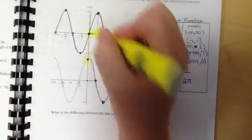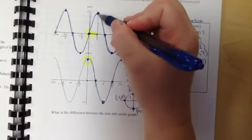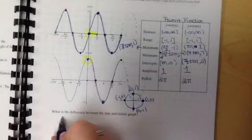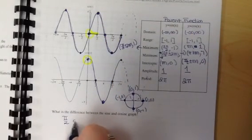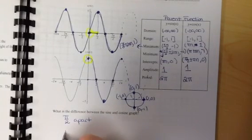But if we shift the length of π/2 over, then sine would be up at one. So these graphs are physically π/2 apart, and the vocab word to describe that is called a phase shift.